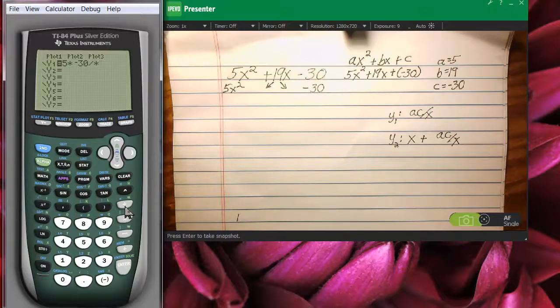Wait a minute. Divided by x. There we go. Then I'm going to come down to y2. I'm going to say x plus 5 times negative 30 divided by x. Now, you're going to have to memorize this method, but it will make your life easier.